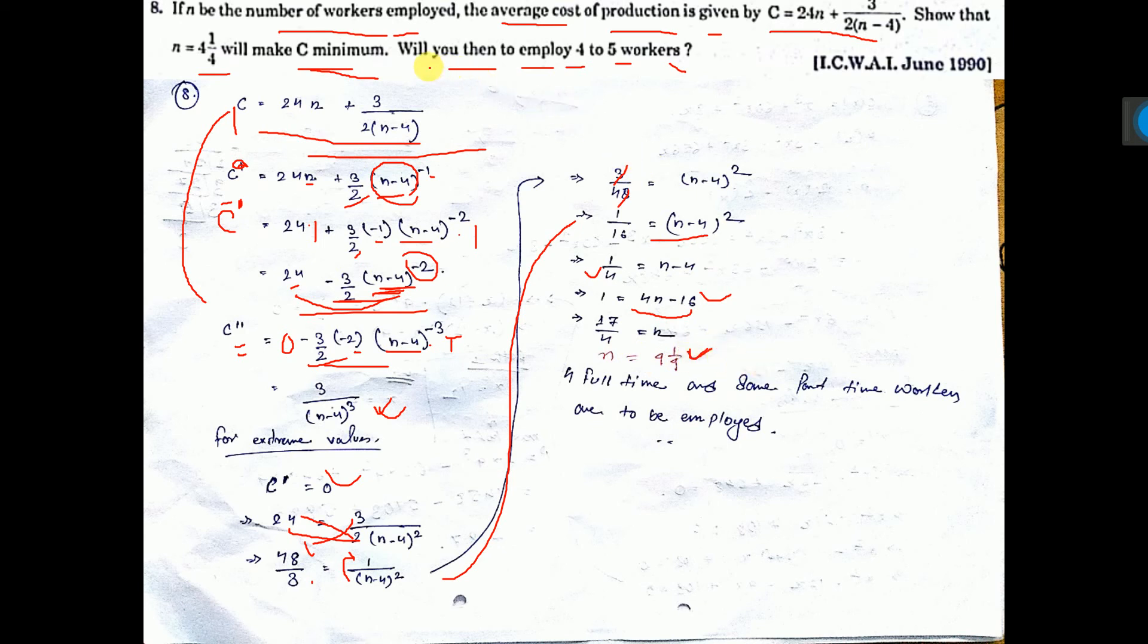Now what will you, will you then employ 4 or 5 workers? Now actually neither 4 nor 5. What will you do? 4 full-time workers. Here 4 and 1 by 4. If you employ 4 workers, then 1 by 4 person, where will you get?